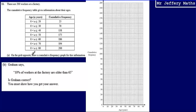On the grid opposite, draw a cumulative frequency graph for this information. So to draw a cumulative frequency graph, all that we have to do is connect up the end point of each class interval, so here 0 to 20, with the cumulative frequency, which is 25.